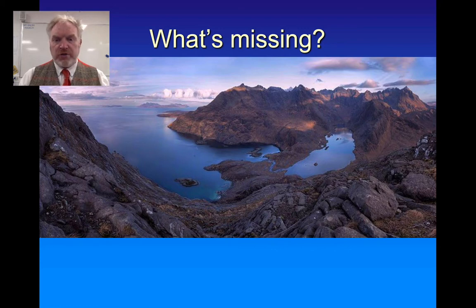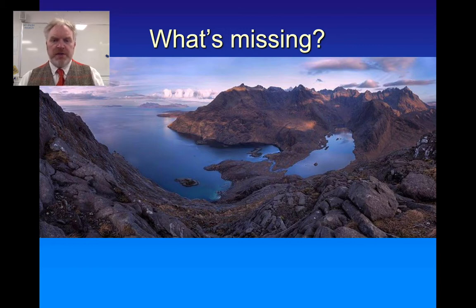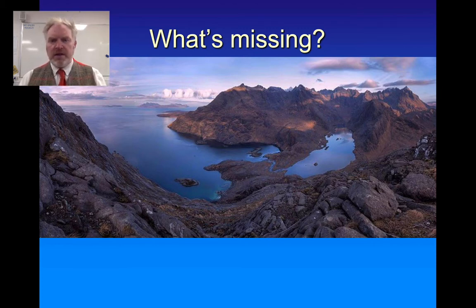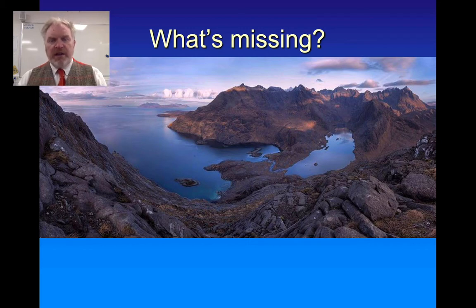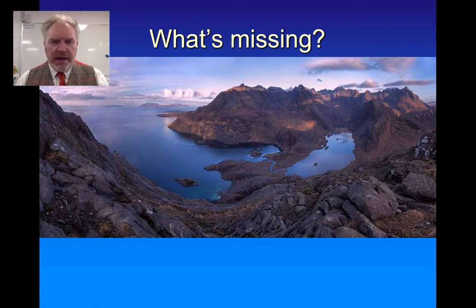This is a view of Loch Coruisk on the Isle of Skye, and the question for us here is: what's missing? If you look at this landscape, particularly the lake on the right-hand side, you can see it sits at the bottom of a deep, steep-sided, fairly flat-bottomed valley. A valley like that can only be formed by a glacier, yet clearly there's no glacier in this valley anymore.